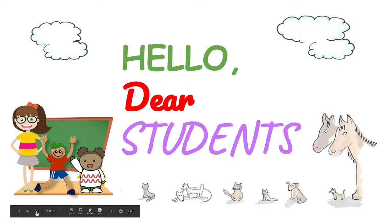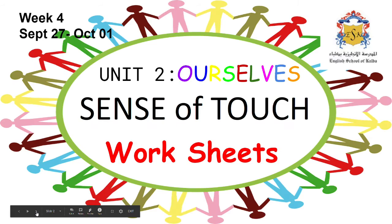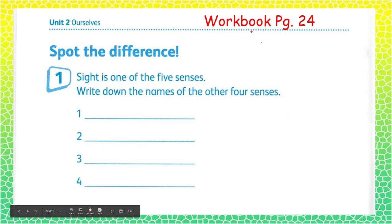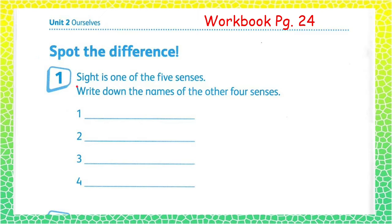Hello there students! In this worksheet, you already have learned about the five senses of our body. On your workbook page 24, spot the difference. Sight is one of the five senses. Now you are going to write down the names of the other four senses.